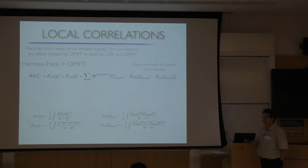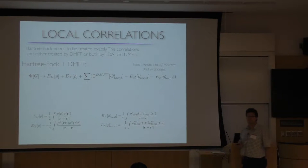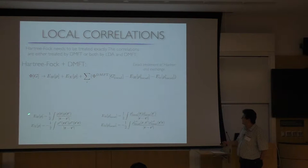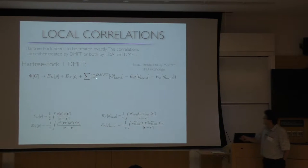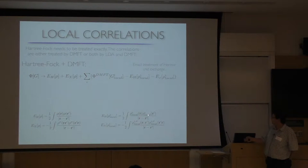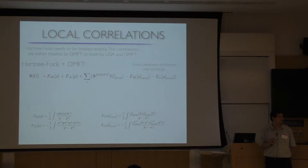We also need to subtract the double-counted term. The nice thing is that here we know exactly what is being double-counted. The exact Hartree term looks like ρ(r)ρ(r')/|r−r'|. In DMFT, the Hartree term has the form ρ_local·ρ_local/|r−r'|. We could write it in a discrete basis, but that is exactly the form.